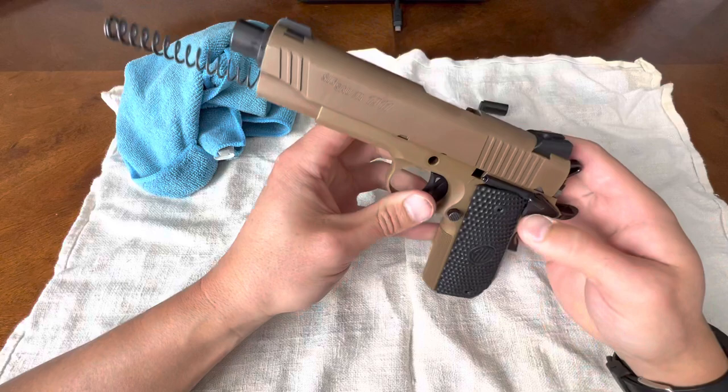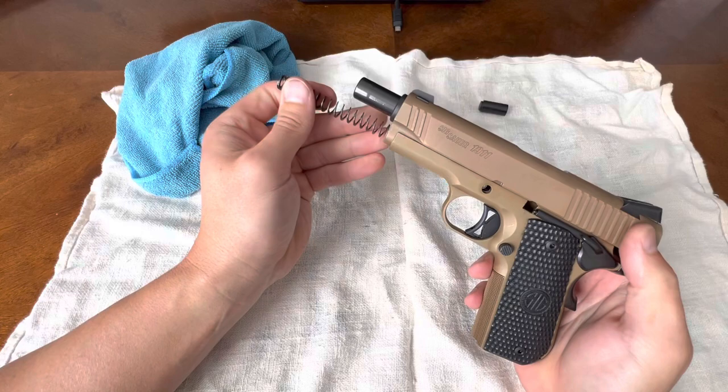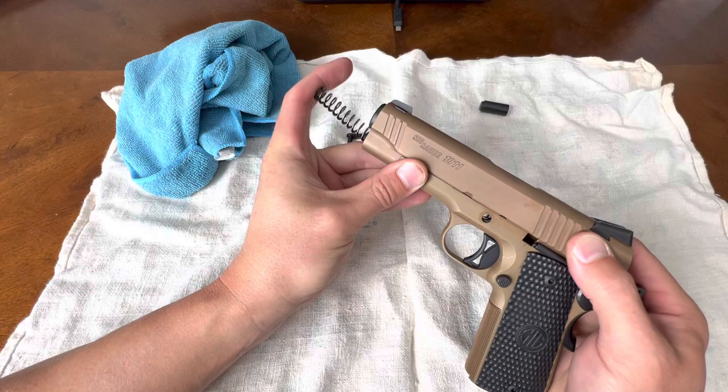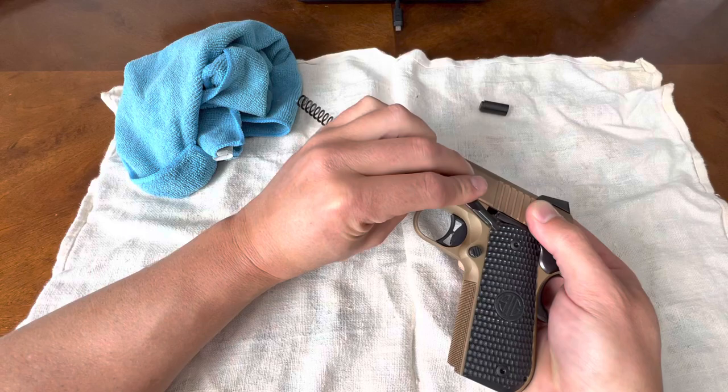Sometimes it's kind of tricky. All right. So now we need to put our pin back in. We need to make sure that our hole on our barrel is lined up in this hole right here. You see. Now it's lined up. So now we're going to put our pin back in.